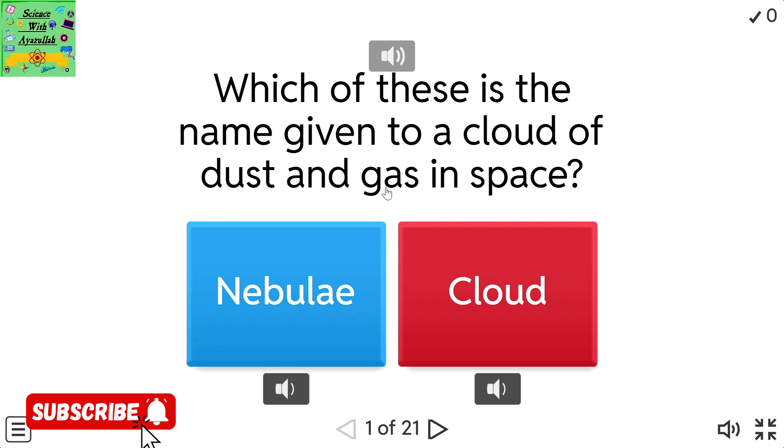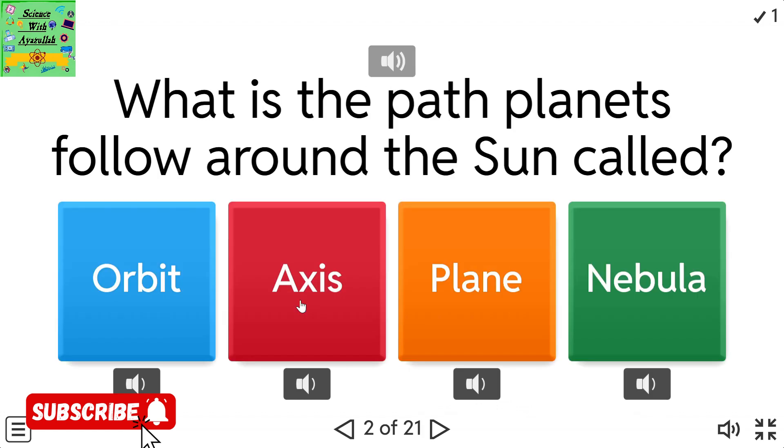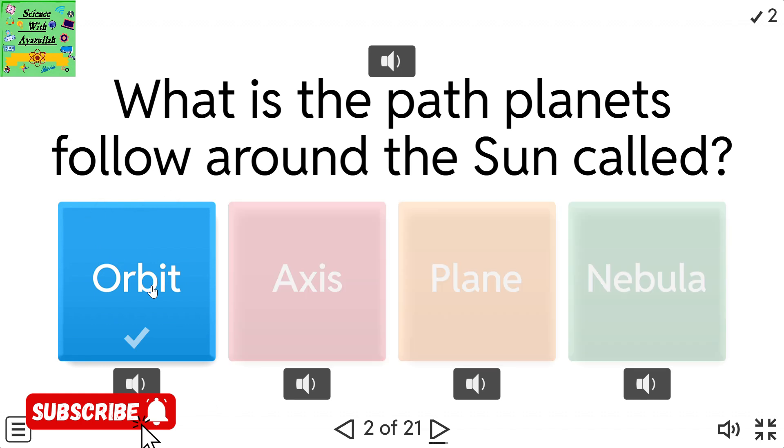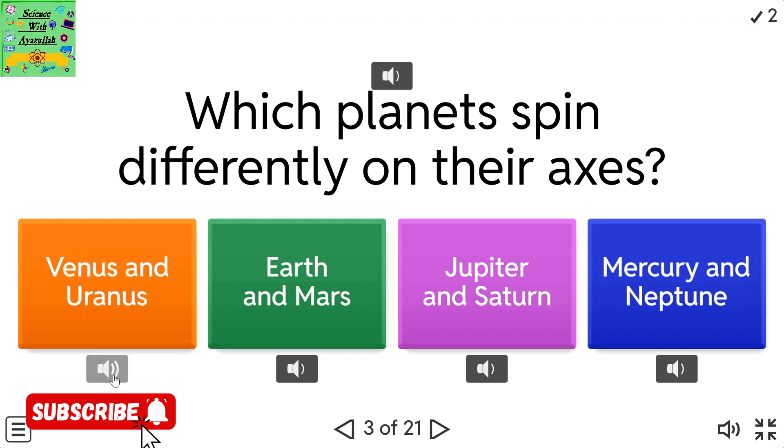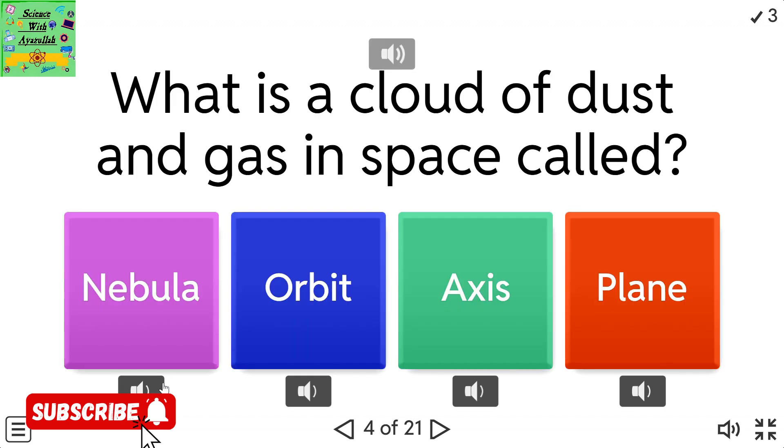Quiz questions: Which of these is the name given to a cloud of dust and gas in space? Nebulae or Cloud. What is the path planets follow around the sun called? Orbit, Axis, Plane, or Nebula. What is a cloud of dust and gas in space called? Nebula, Orbit, Axis, or Plane.